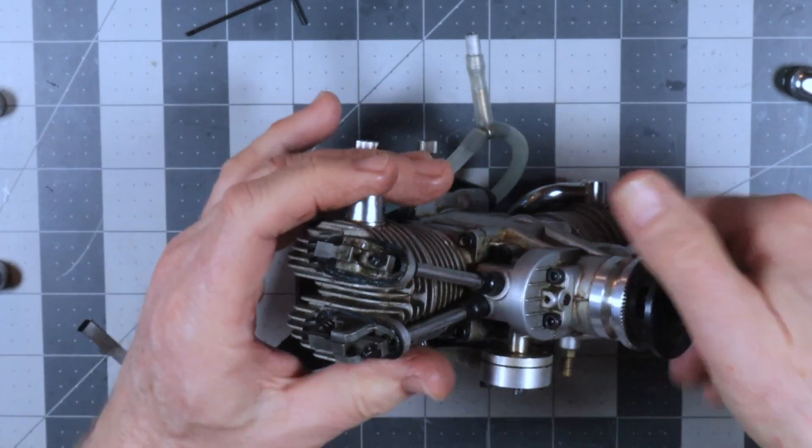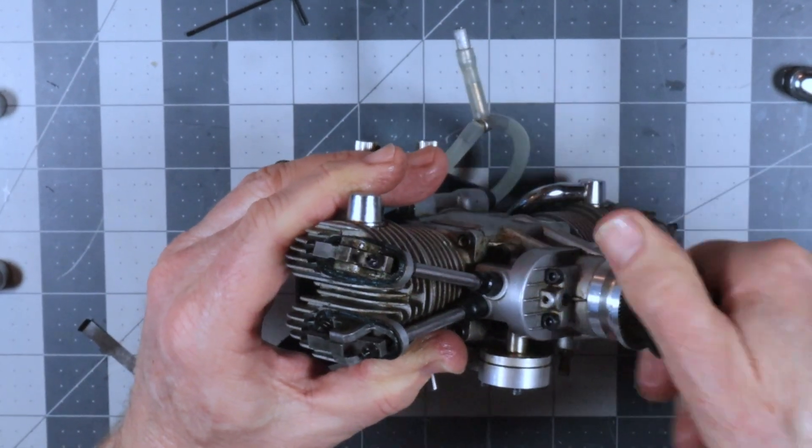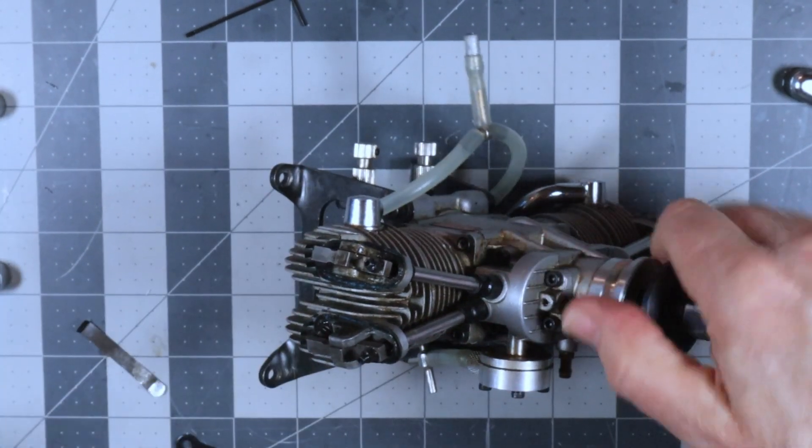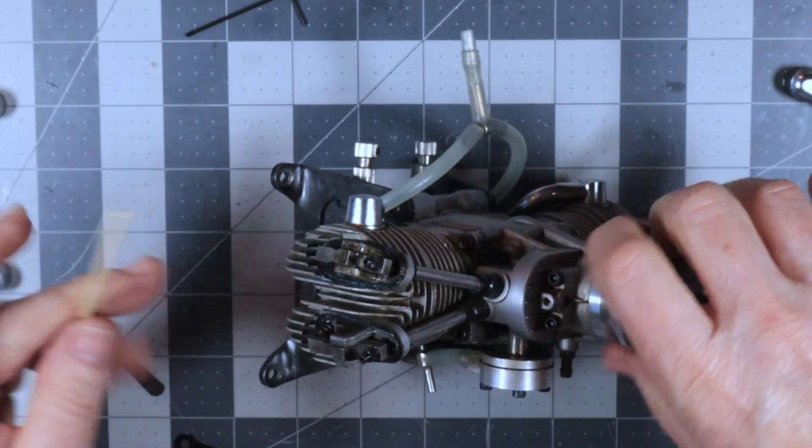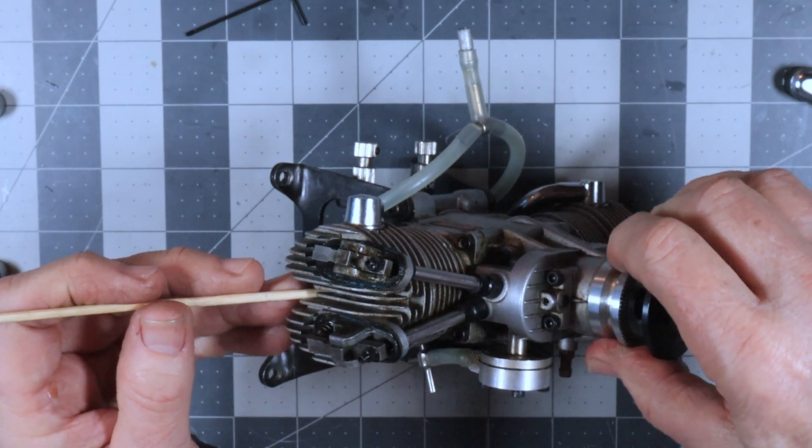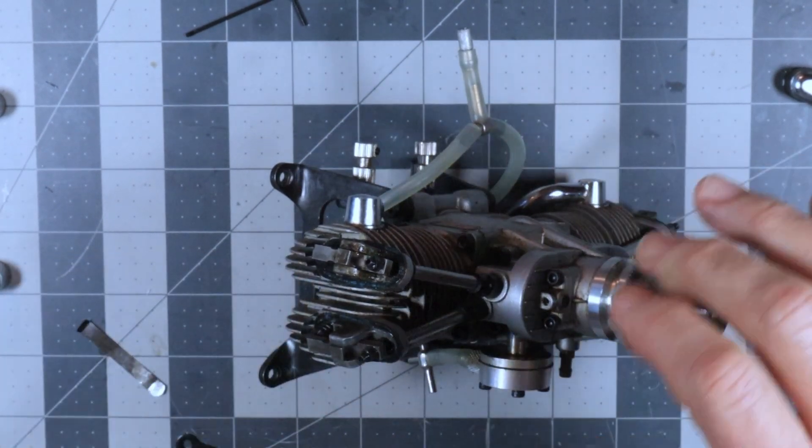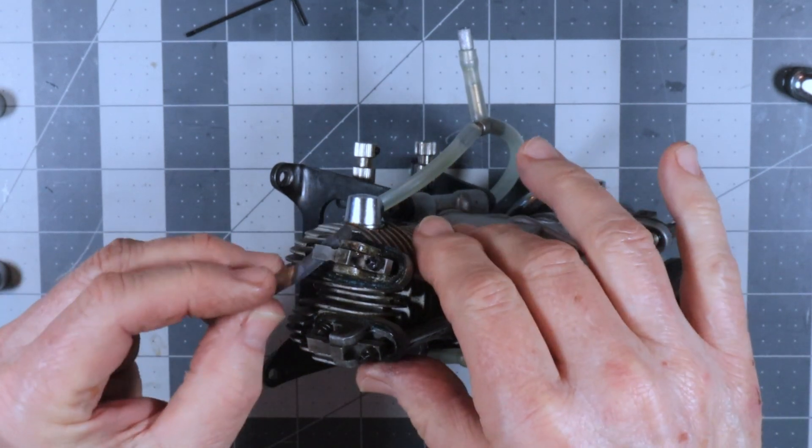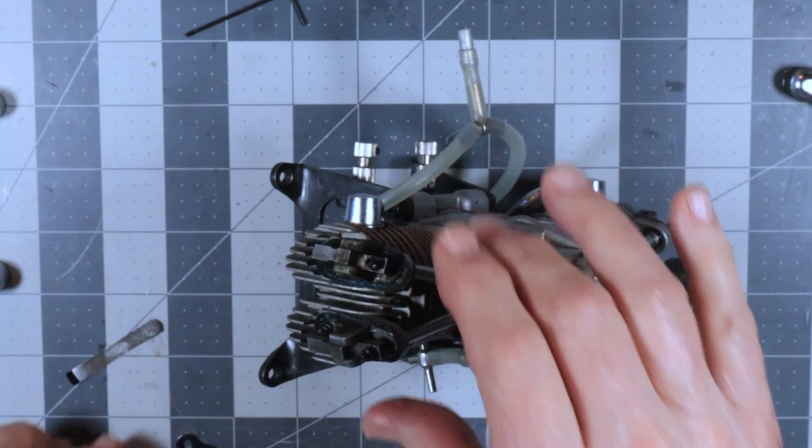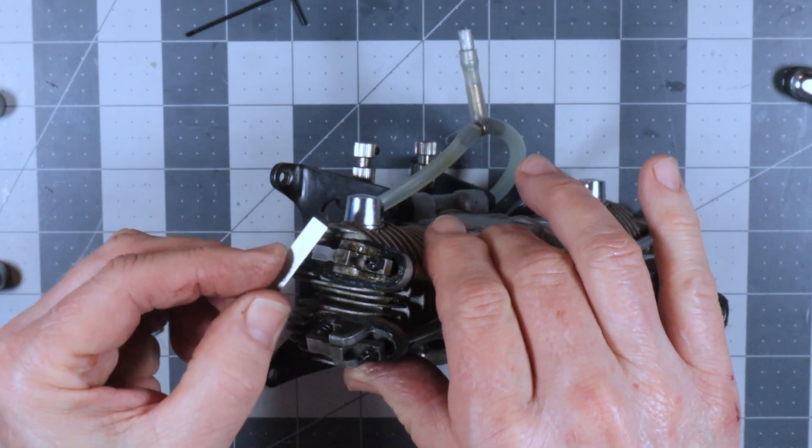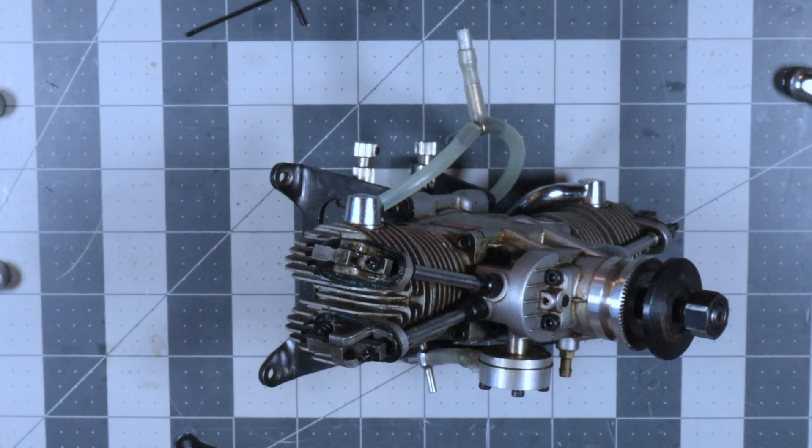Now let's rotate through a few times. Top dead center, we got our go gauge. Just touching it. And that won't fit. The no go gauge will not go. So we're good there. So let's check our exhaust valve.